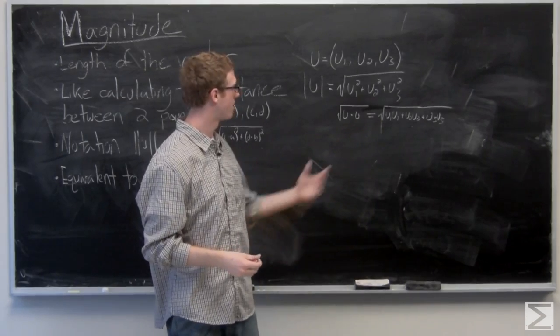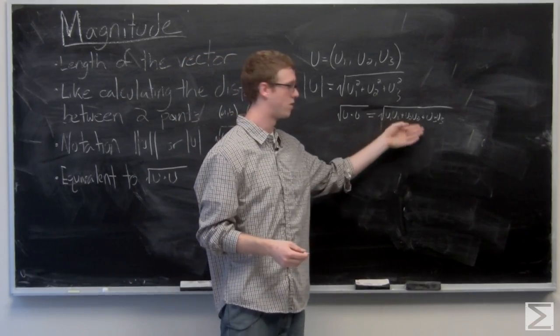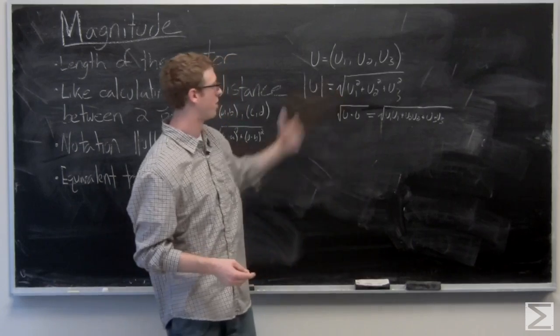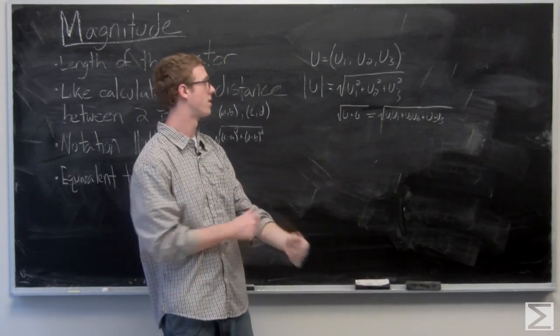So u dotted with itself is going to be u1, u1, u2, u2, u3, u3, or u1 squared, plus u2 squared, plus u3 squared.